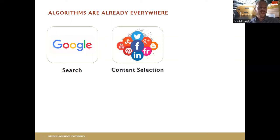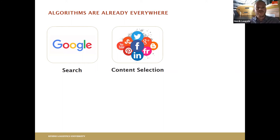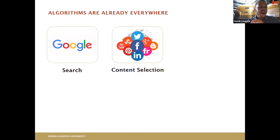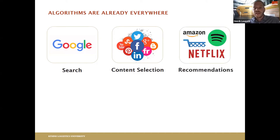Another example: content selection. If you use social media, the things you see are largely influenced by what you have been looking at in the past. If you're interested in cats you'll see a lot of cats; if you're interested in beaches, Instagram or Facebook will try to understand what you like and select content for you — which can be good or bad. If you have a certain bias, social media might actually make it worse because you only see what you already believe.